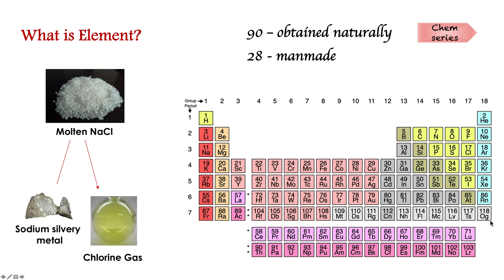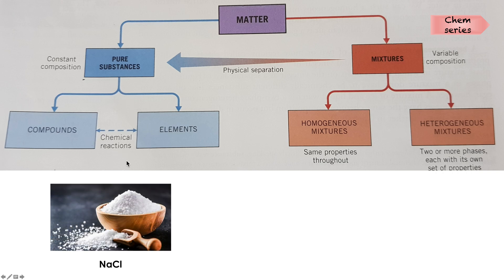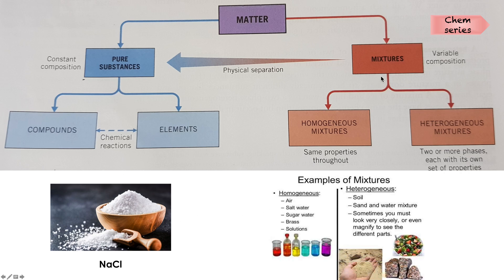There are 118 elements in the periodic table. As discussed, matter is composed of pure substances or mixtures. It is rare to get a pure substance, which contains only elements and compounds — for example, NaCl. Coming to mixtures, we have homogeneous and heterogeneous.